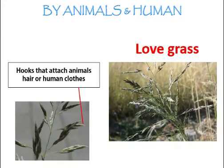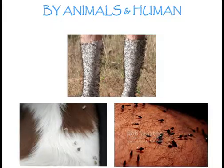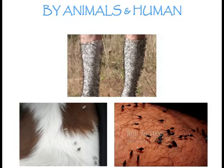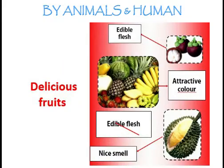Lovegrass disperses its seeds through hooks that attach them to animal hair or human clothes. Fruits such as mangosteen are dispersed by animals and humans because they have edible flesh, a nice smell, and attractive color.